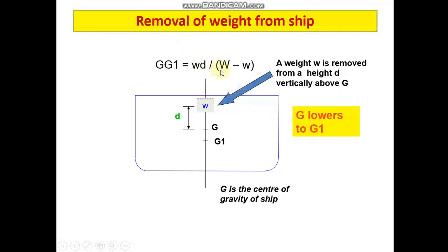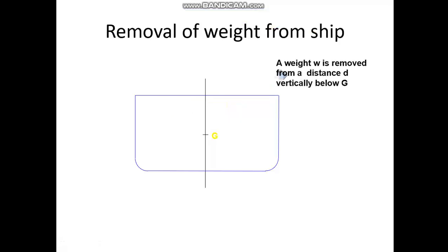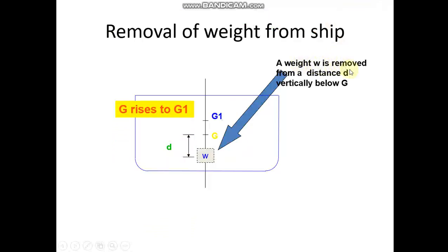This is the formula used for removal of some mass from the ship. Suppose we remove a mass w which is at a distance d below the center of gravity — previously we discussed the scenario where the mass was removed from above the center of gravity. Now we have removed a mass w at a distance d below the center of gravity G of the vessel. As a result, there will be a shift, but the difference is G will shift towards the top — away from the place where the mass is removed.